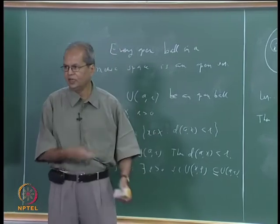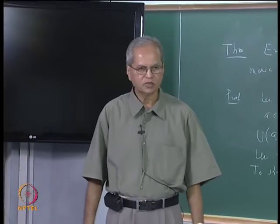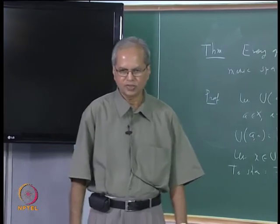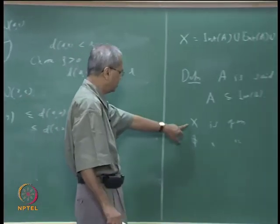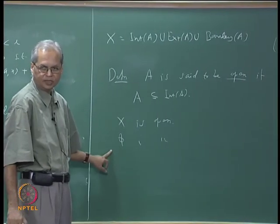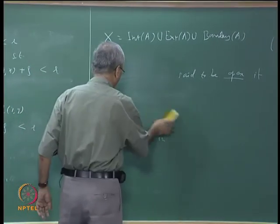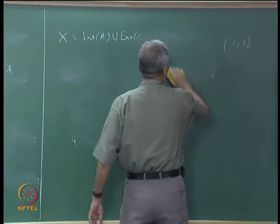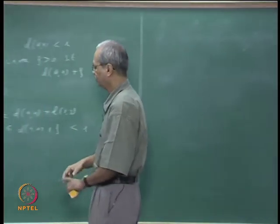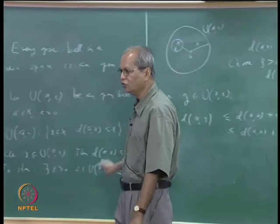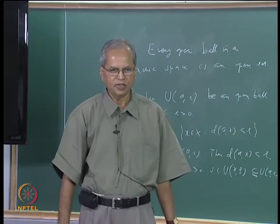Every open ball in any metric space is an open set, and in yesterday's class we saw several examples of open balls in various metric spaces, so we have several examples of open sets now. We shall see some more examples. The full metric space X and the empty set are always open sets. We shall also see properties of open sets — how to form new open sets from known open sets, such as via unions or intersections.